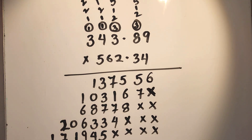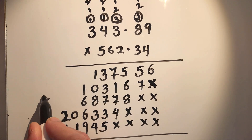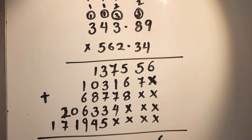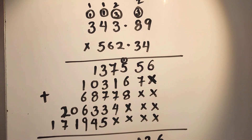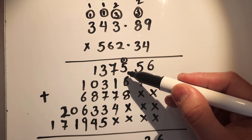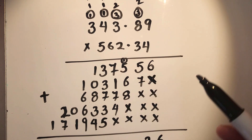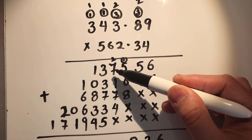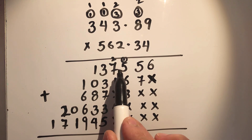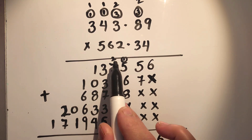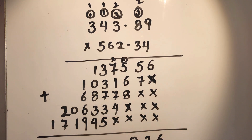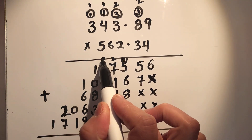So now we'll add the numbers. 6 plus 0 is 6. 5 plus 7 is 12, 1 carry over. So 6 plus 6 is 12, 12 plus 8 is 20, so 0, 2 carry over. So 7 plus 1 is 9, and adding across: 7 plus 2 is 9, and 10, 10 and 7 is 17, 17 and 4 is 21. So 2 carry over here.